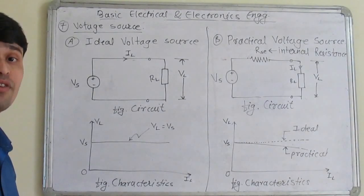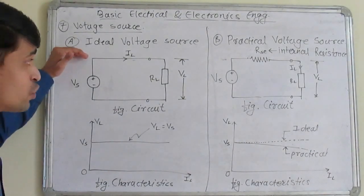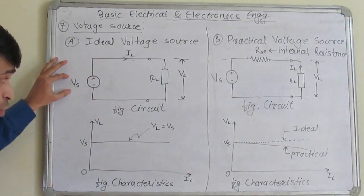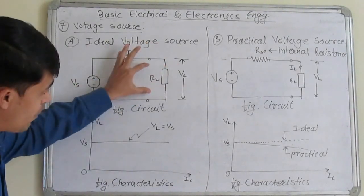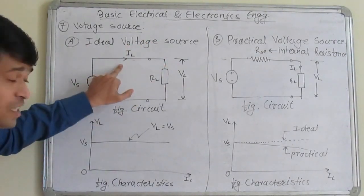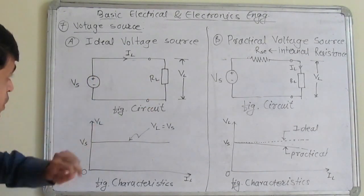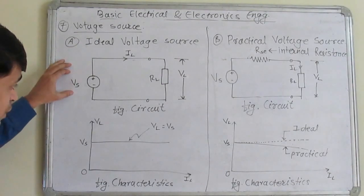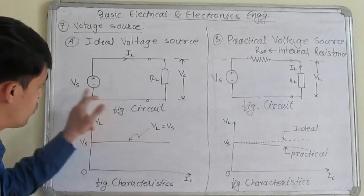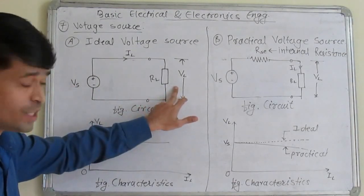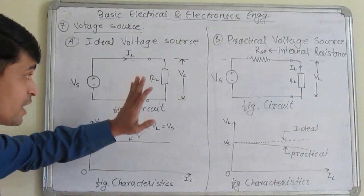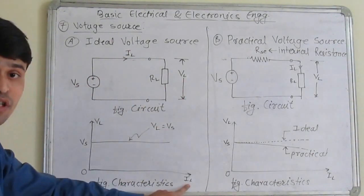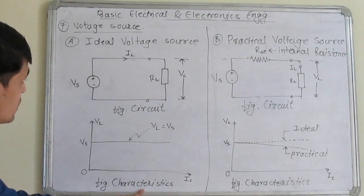Now we will see the types of voltage sources. First is the ideal voltage source and the practical voltage source. In the circuit, Vs is the source voltage, Vl is the load voltage appearing across load resistance RL, and IL is the load current flowing through the load resistance. An ideal voltage source is one where the source voltage directly equals the load voltage — Vs equals Vl — regardless of the load current. This is the characteristic of the ideal voltage source.